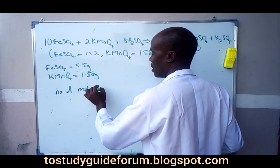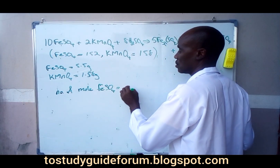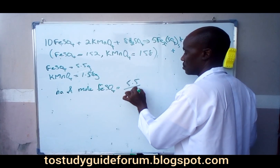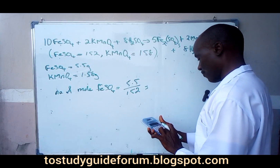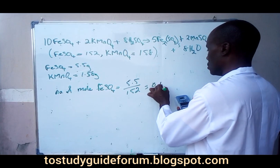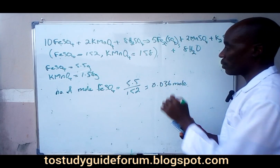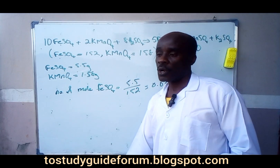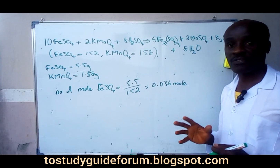The number of moles of iron(II) is equal to what we have in one dm³ of the solution. The content that we react in the titration is 25 cm³.